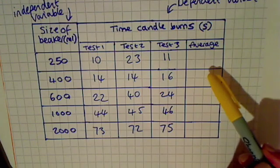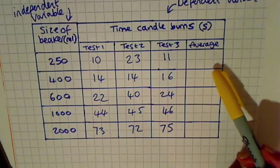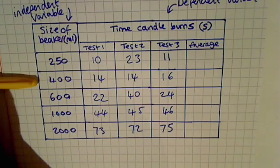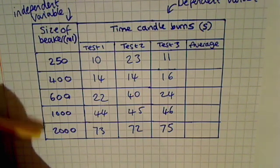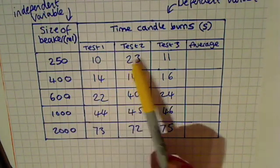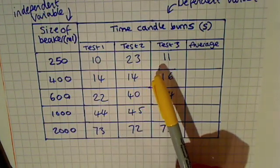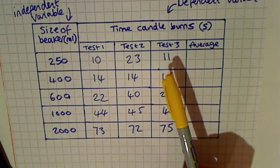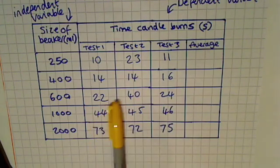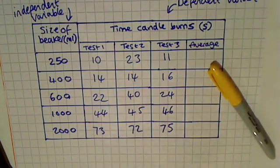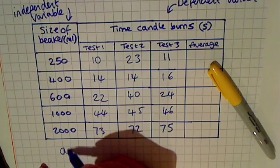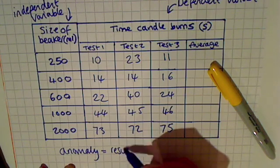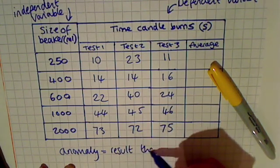To identify anomalies, first of all, for each value of your independent variable, you need to look along the three tests to see if there are any odd results. An anomaly is a result that does not fit the pattern. I'll just write that down here to help us: an anomaly is a result that does not fit the pattern.